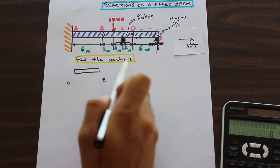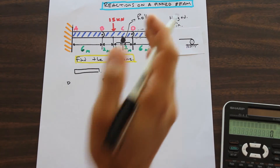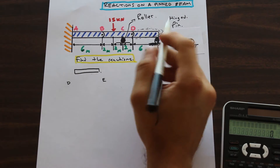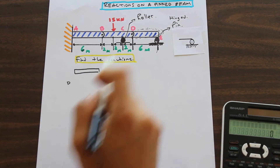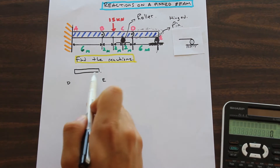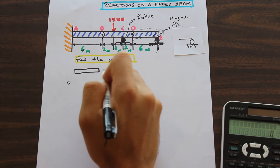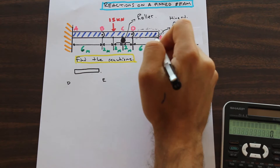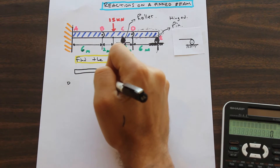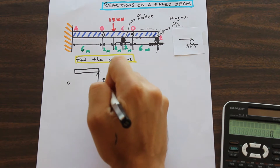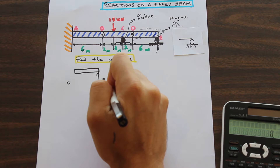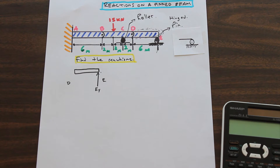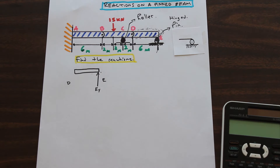So what are we asked to do? We're asked to find the reactions in the beam. We are going to start with section DE. I've cut section DE out here — we have a free body diagram with point D on the left and point E on the right. Let's go ahead and draw the reaction for point E, which we're going to call EY — the reaction at E in the Y direction.